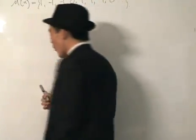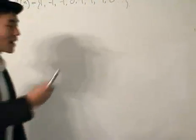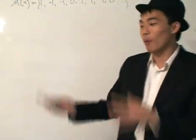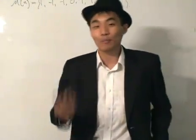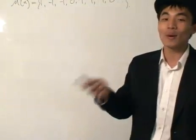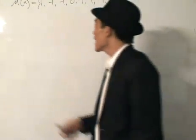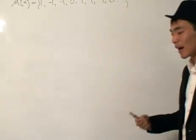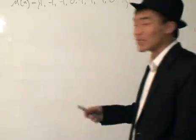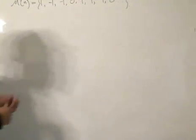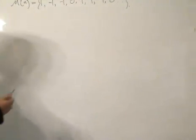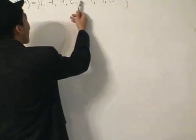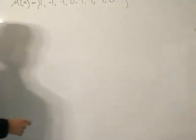So you know what the Möbius function is. We have a positive set of integers, and all the positive integers are put into three categories: zero, minus one, and one. We represent that as mu. If we list out the first few results of the Möbius function, this is what we get: one, minus one, minus one, zero, minus one, one, minus one, zero.